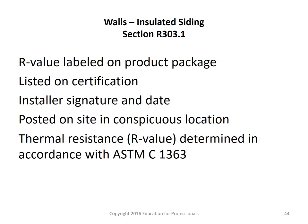For wall insulated siding, the R-value labeled on the product may count toward the requirement and should be listed on a certification. The installer must sign and date it and post it in a conspicuous location — usually near the electrical panel, though the increasing amount of required paperwork may necessitate a dedicated enclosure or box.